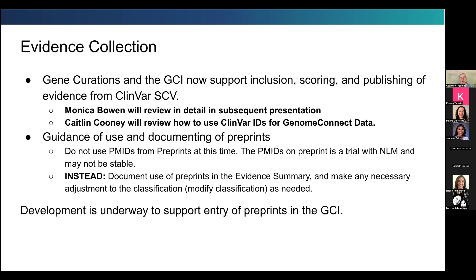Talk with your GSEPs about where they feel comfortable with the amount of evidence from ClinVar SCVs. When thinking about using preprints, do not use the PMIDs from those preprints — document them in your evidence summary and make adjusted classification changes. ClinGen Genome Connect publishes different patient information collected to ClinVar through these SCVs, making it a rich way to use that data for gene disease validity curations.